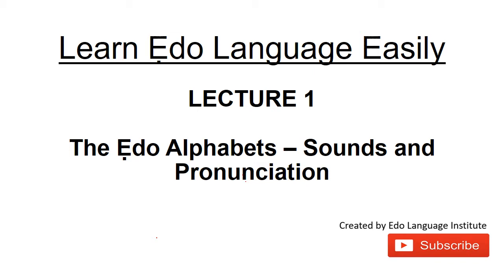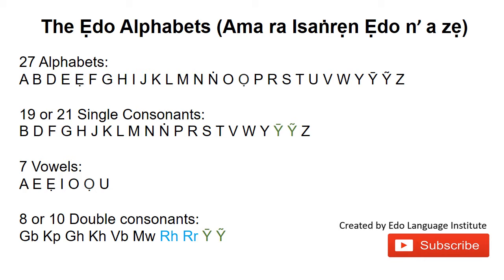Don't forget to subscribe to this channel and also like and share this video. The EDO alphabets: A, MA, A, ISA, E, DO, NA, ZE.